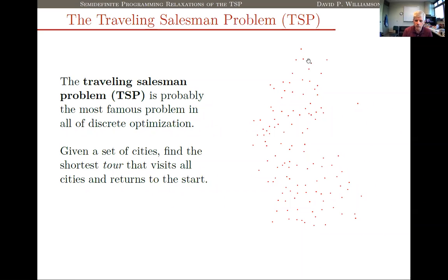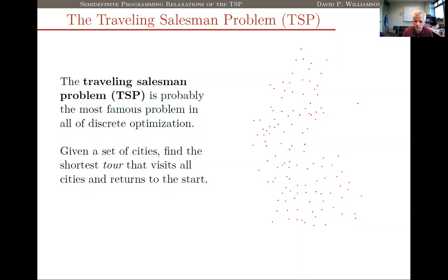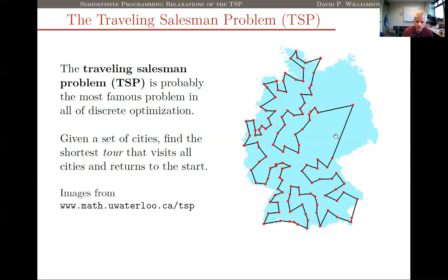On the right-hand side of the screen I have 120 cities. If you consider the Euclidean distance between them as the cost of traveling between any pair, I'd like to find the tour that visits all of them and returns to a start point. At the time it was solved to optimality, this was the largest TSP instance that had been solved optimally — 120 cities from what was then West Germany. You can pretty easily pick out the city of Berlin over on the right. This was solved to optimality by Martin Grötschel in 1977.